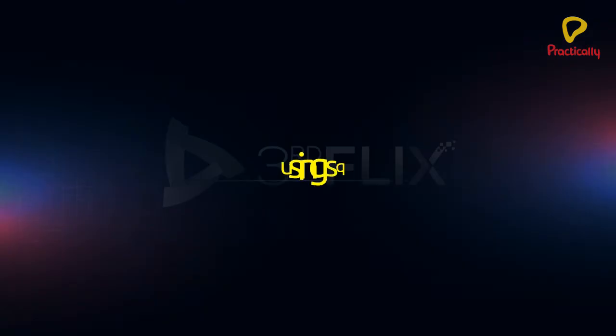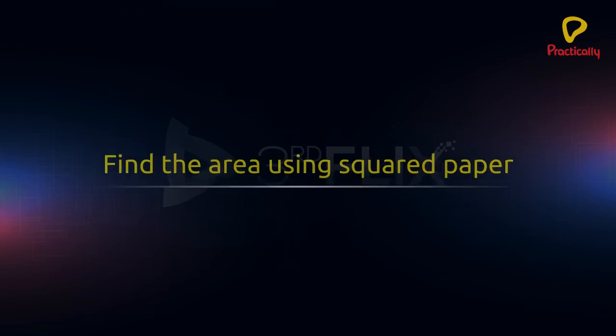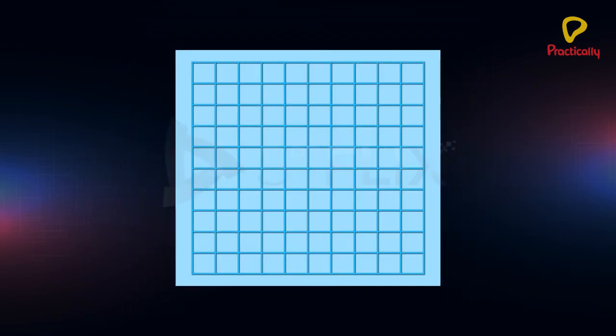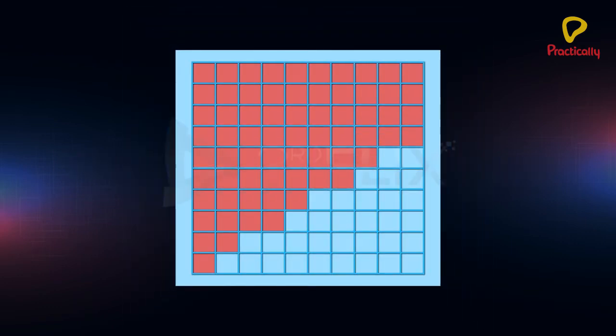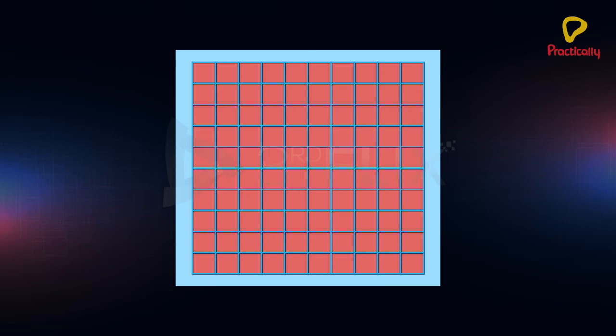Let us see how to find the area using squared paper. Squared paper is a paper that is covered with squares formed by lines that run from top to bottom and side to side.